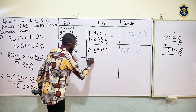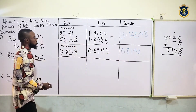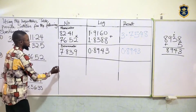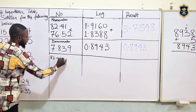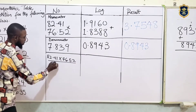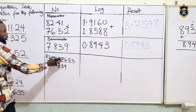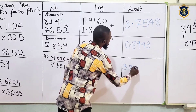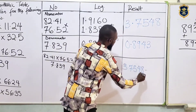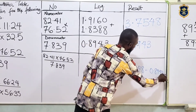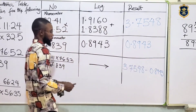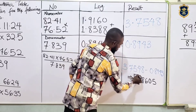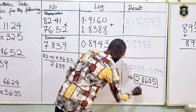Now we're going to subtract because we're subtracting the denominator from the numerator result. The question is 82.41 times 76.52 all over 7.839. So we have 3.7548 minus 0.8943. Using calculation to subtract, we get 2.8605. This is the total result. From here we'll look for the antilog.